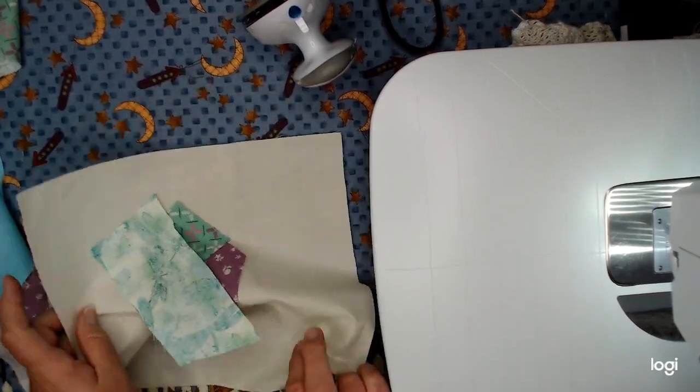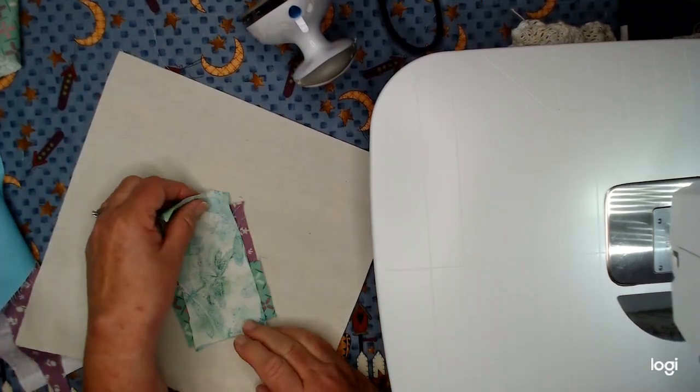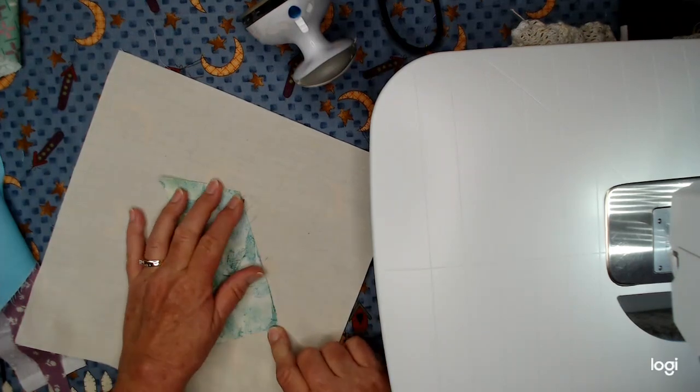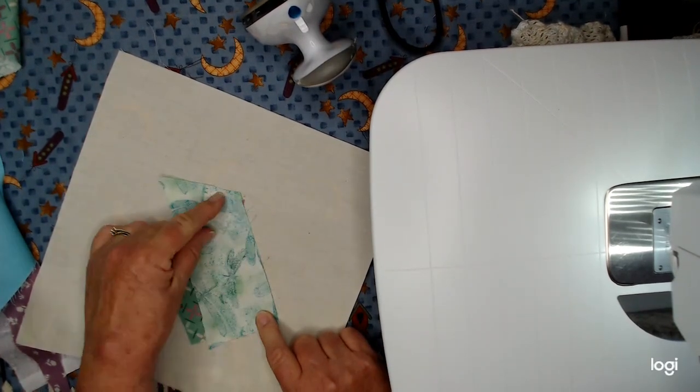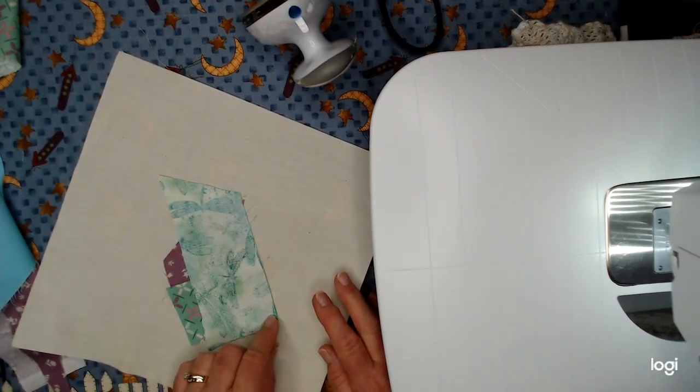So I'm going to put the dragonfly here. So all I need to do is match up my raw edges. I've got it upside down and make sure this overlaps and this overlaps. Don't worry if it overlaps too much or if that's crooked or none of that matters.